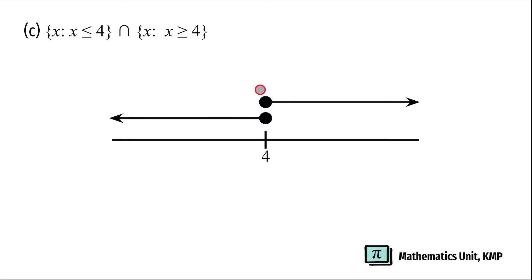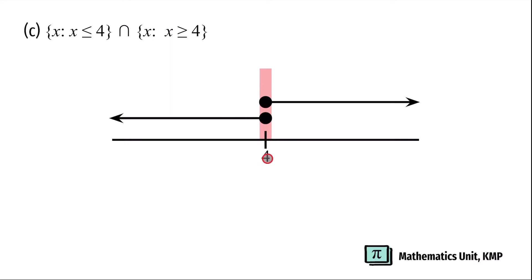If you can see here, these two lines don't overlap, but actually x less than or equal to 4 and x greater than or equal to 4 overlap at x equals 4. So the solution set is {4}.